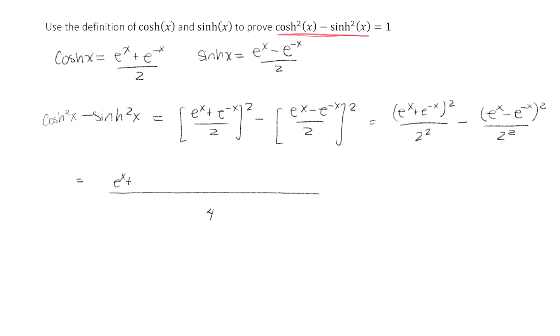So here is that 4 in my denominator. And in the numerator, we have e to the x plus e to the negative x times itself, minus e to the x minus e to the negative x also times itself.